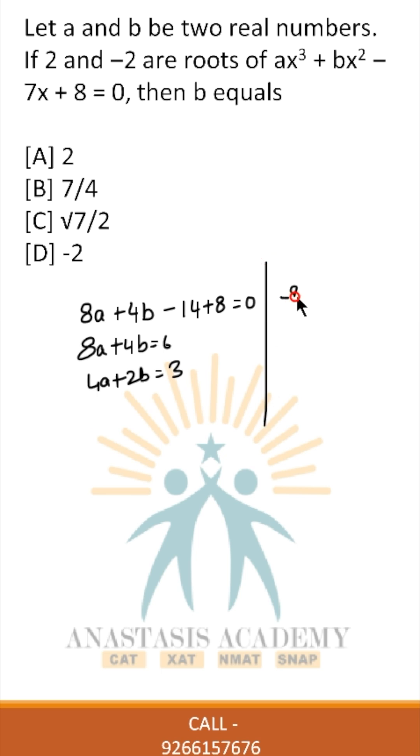The second one, we will have -8a + 4b + 14 + 8 = 0, or 4b - 8a = -22, or 4a - 2b = 11.